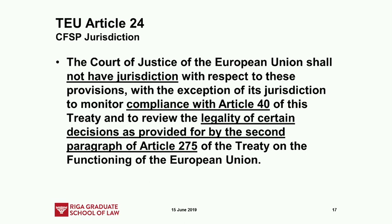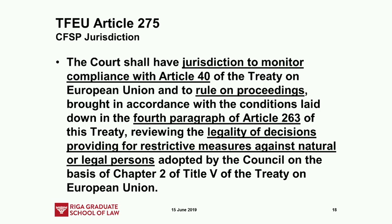Coming back to CFSP: we are very explicit that the Court of Justice does not have jurisdiction — that's still the old exclusion. But there are two exceptions: first, the balancing act under Article 40 can be checked by the court; and second, the legality of decisions under Article 275 — that is, the sanctions — which is then repeated in the Treaty on the Functioning of the European Union, referring explicitly to the legal basis in Article 263 for such a validity test.